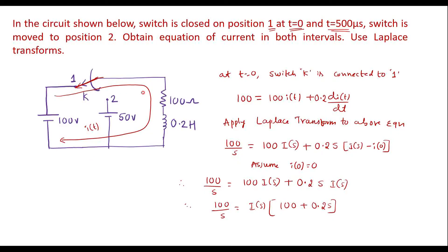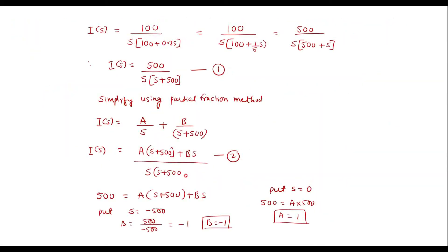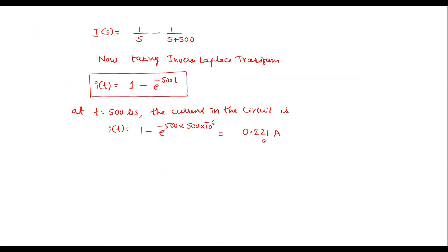This is the current flowing in the circuit at t equal to 500 microseconds. At that moment, the switch is moved from position 1 to position 2. The current will now flow around the new loop, and the initial current in this new circuit is 0.221 A as we found. Therefore I(0) = 0.221 A at t equal to 500 microseconds.